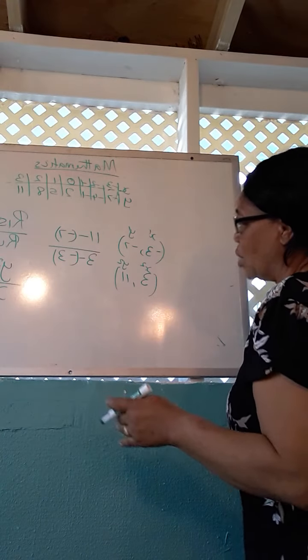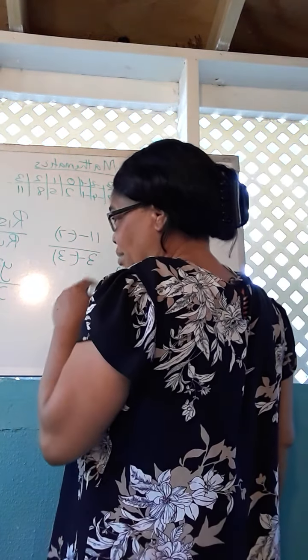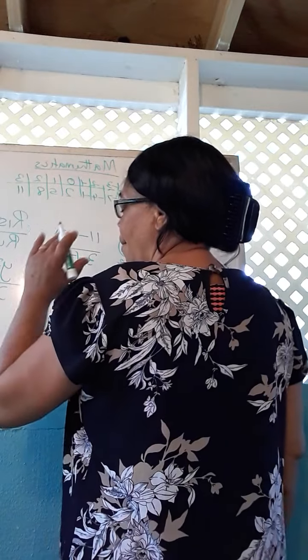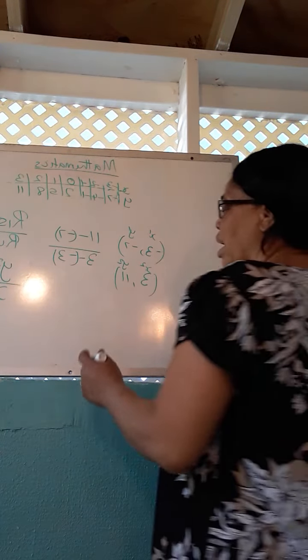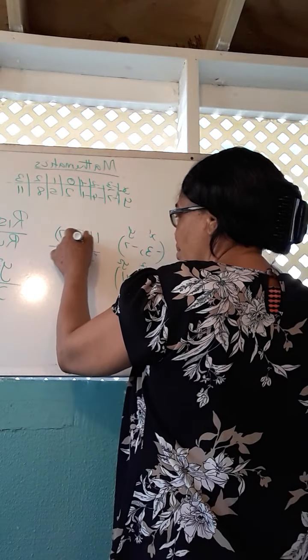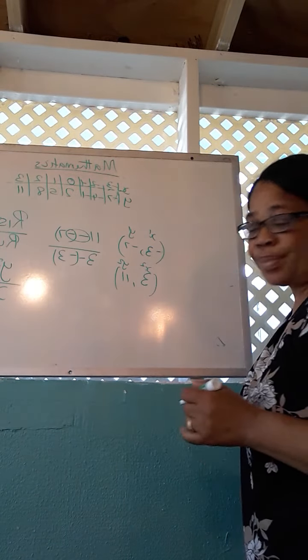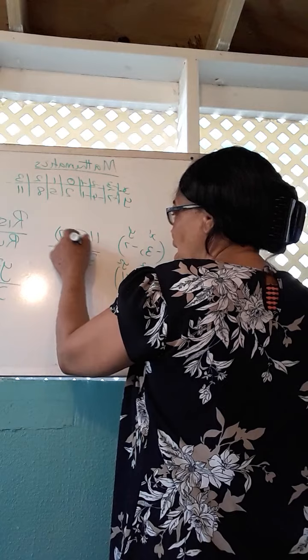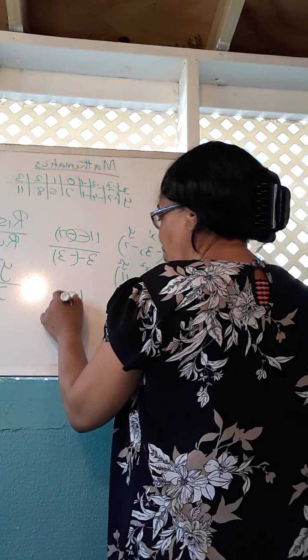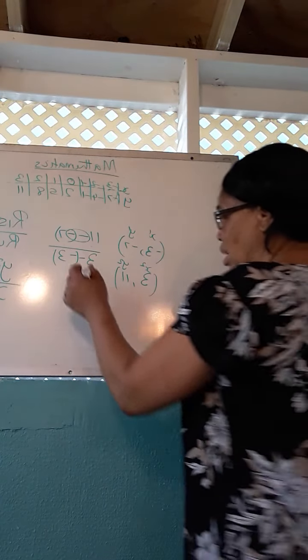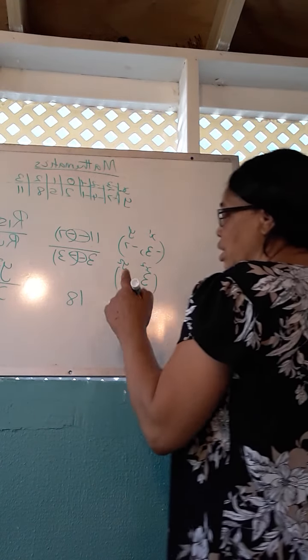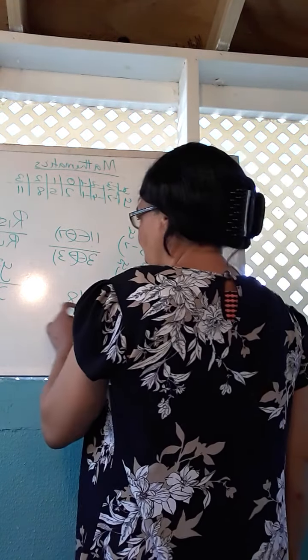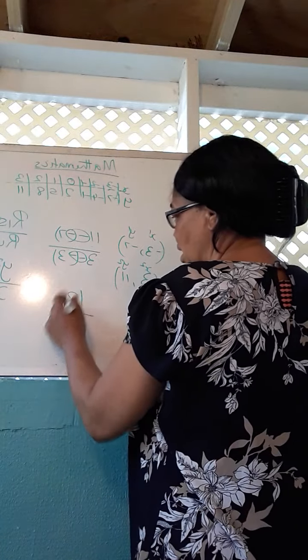And so here we go with the calculation. A minus times a minus is going to give me a plus. And so I have 11 plus 7, which is going to give me 18. Same thing that is happening here. Minus times a minus is going to give me a plus. 3 plus 3 is going to give me 6.